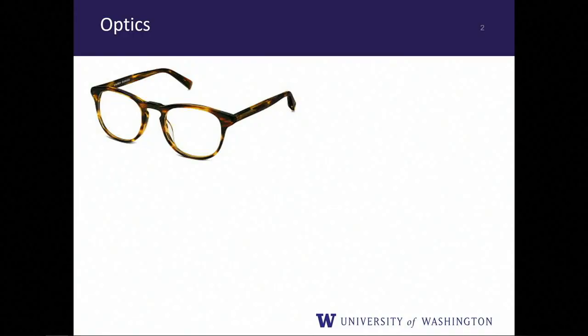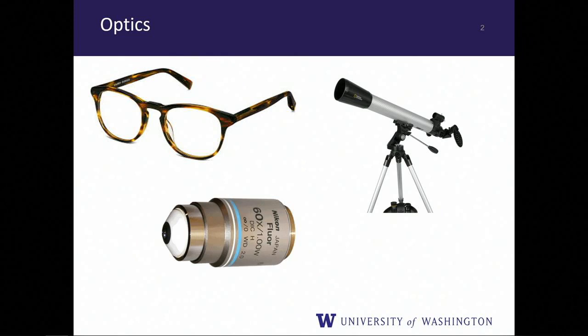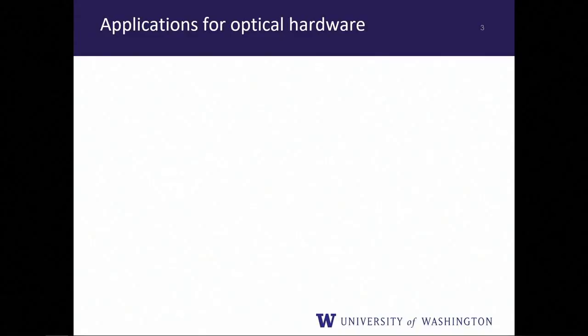Whether they're for human eyes — like these glasses, which helped me because I have bad vision — or if we're interested in imaging large things that are far away like using a telescope, or imaging small things that are relatively close using a microscope objective. These are all nice optics that work really well, but they've been known since the late 1800s. As optical researchers, we always want to push further to get better functionalities, and we're currently pushing optical hardware in many different ways.